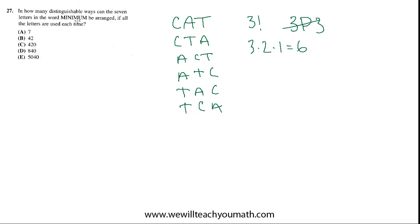We have a seven-letter word, so what we want to do is probably 7 factorial. But the problem is the repeat letters. If you take the way the letters in the word MINIMUM are arranged right now, you could switch one M with another M and have the same outcome. So technically we're over-counting — 7 factorial is too big. There really aren't that many distinct arrangements because some letters can be swapped and still produce the same word.